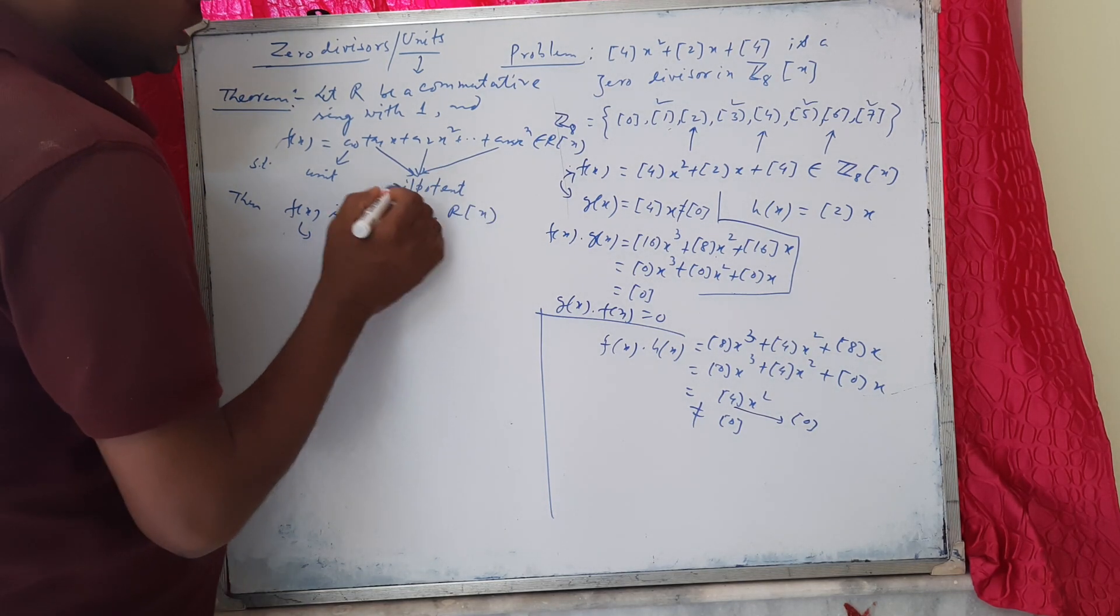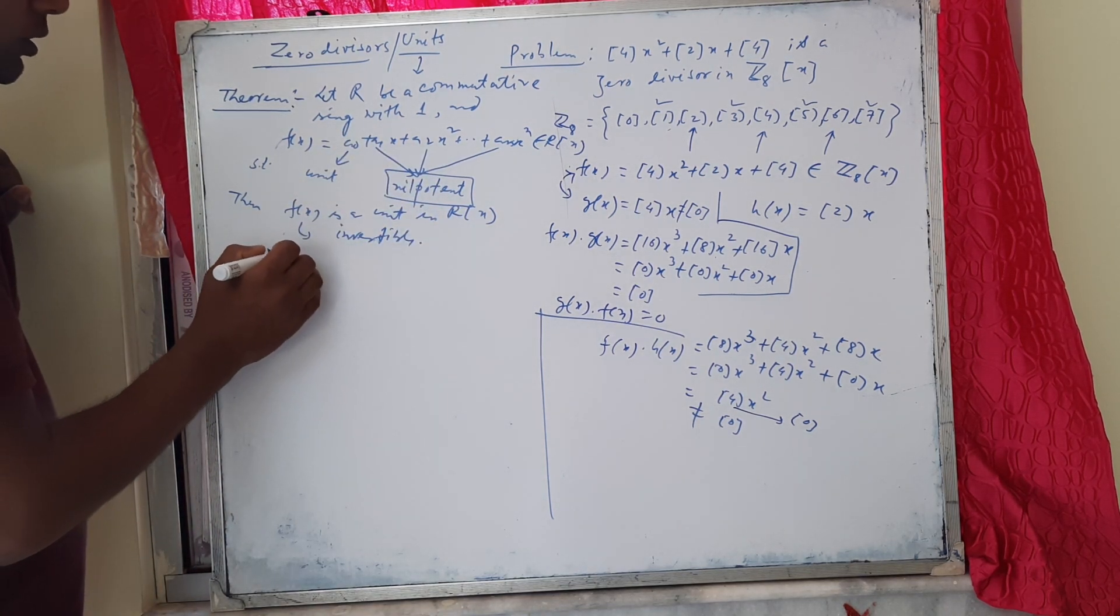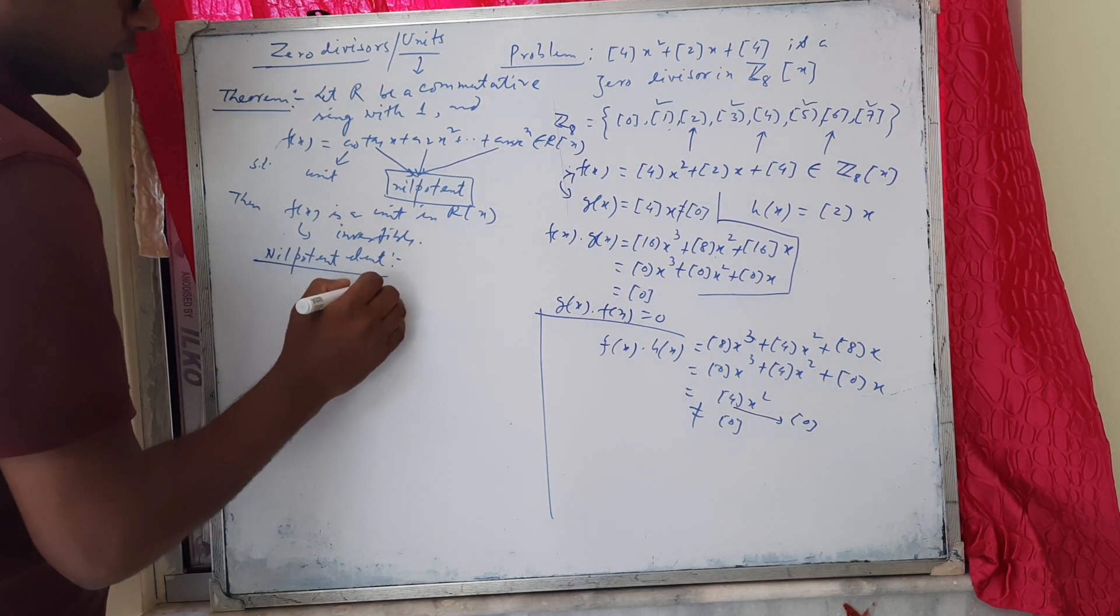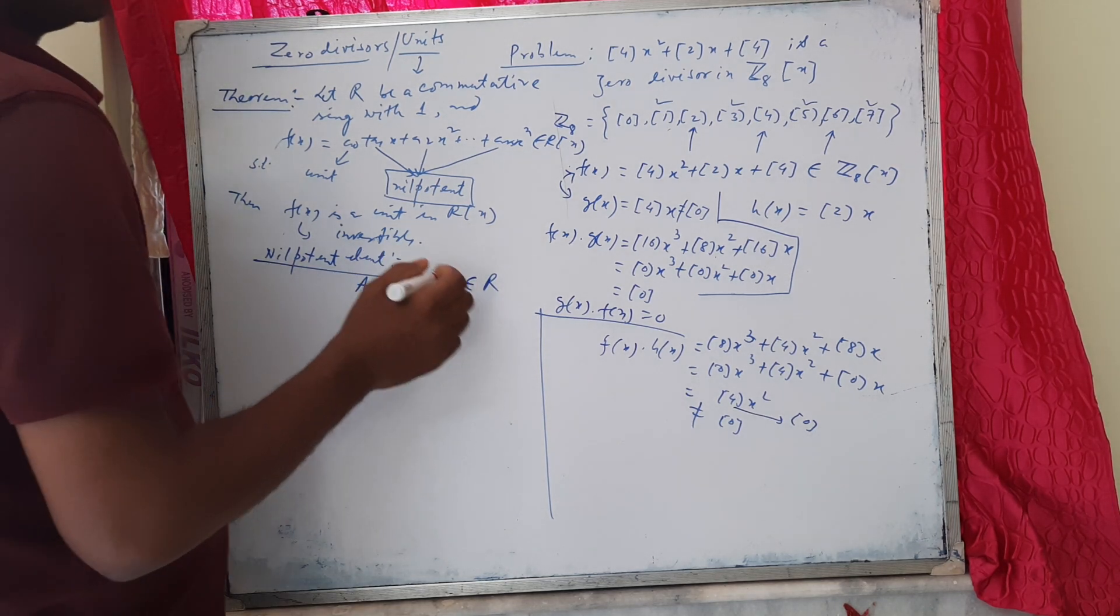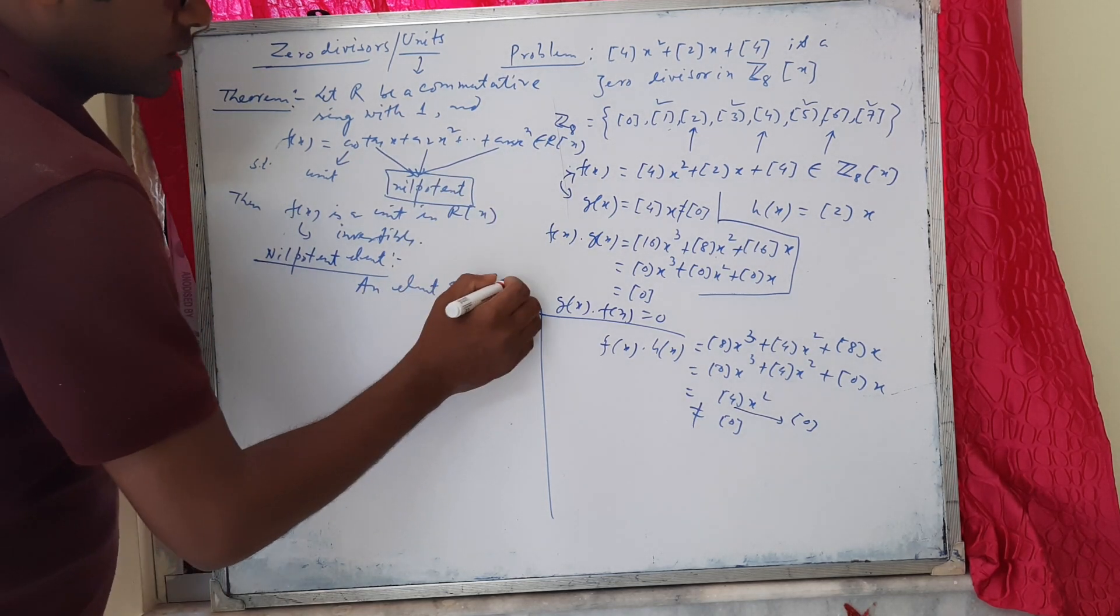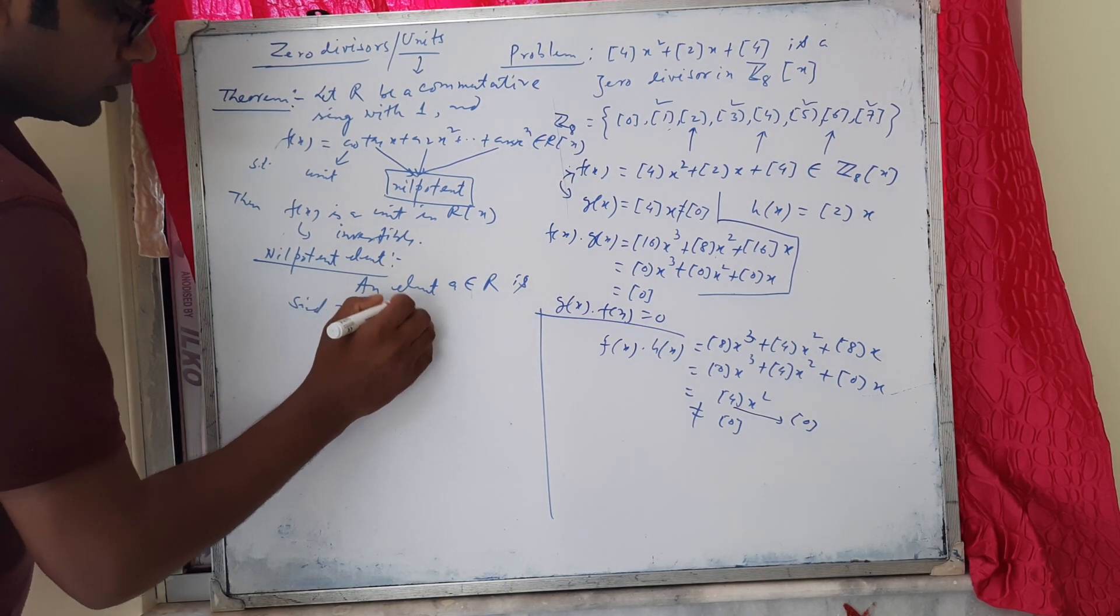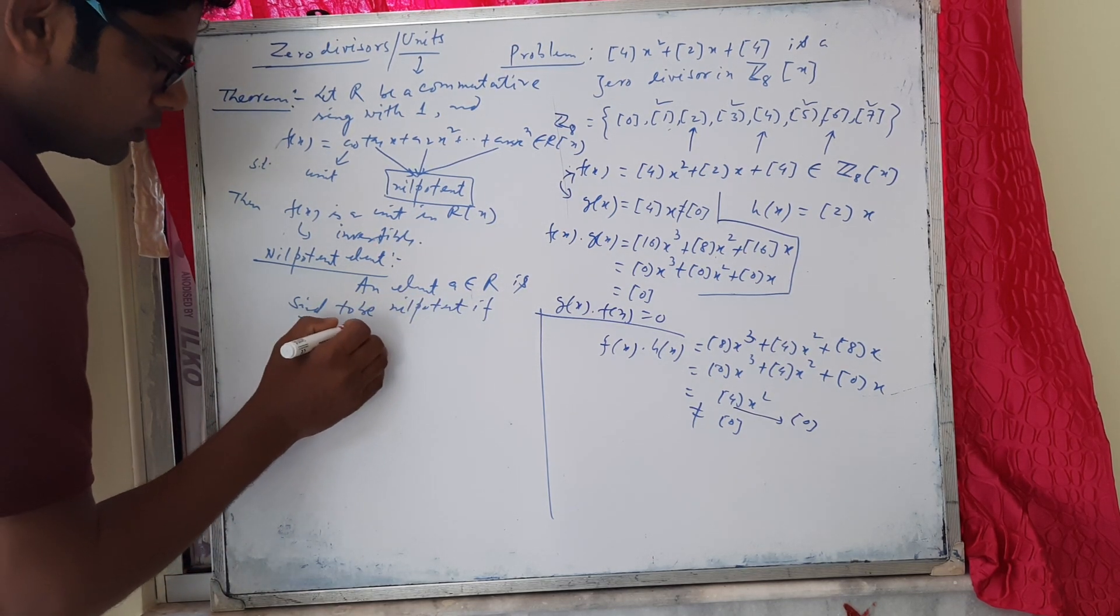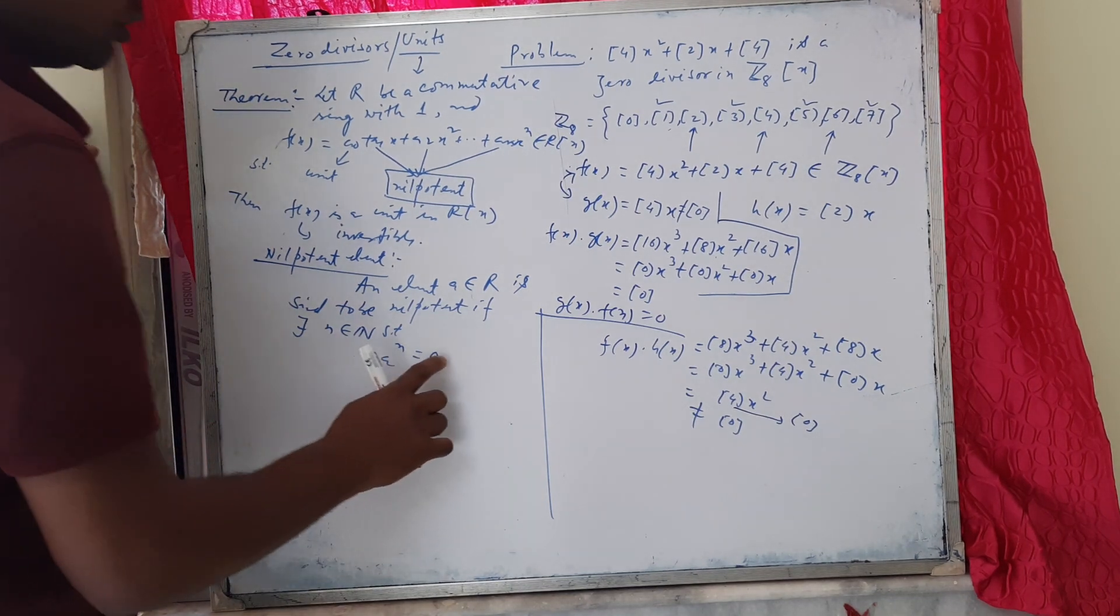Before that, we need the definition of nilpotent elements in R. A nilpotent element: we suppose that the ring R is commutative with unit 1. An element a in R is said to be nilpotent if there exists a positive integer n such that aⁿ = 0, the zero element in the ring R.